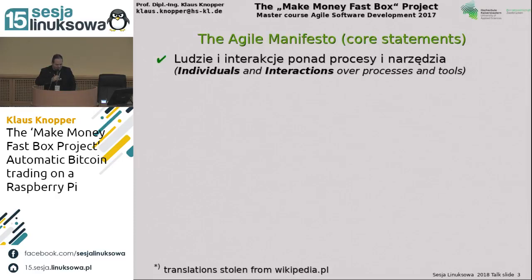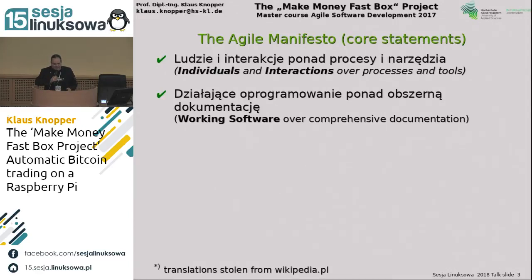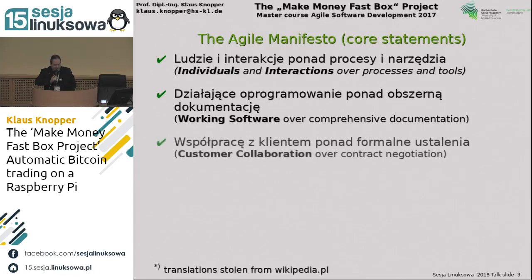The translations are of course taken from Wikipedia. Individuals and interactions are more important than processes and tools — this is something new in terms of traditional development methods. Working software is more important than comprehensive documentation. Every developer knows that's really great, as almost everybody hates documentation. But of course documentation is an important part of agile software development too — it just doesn't play the main role.